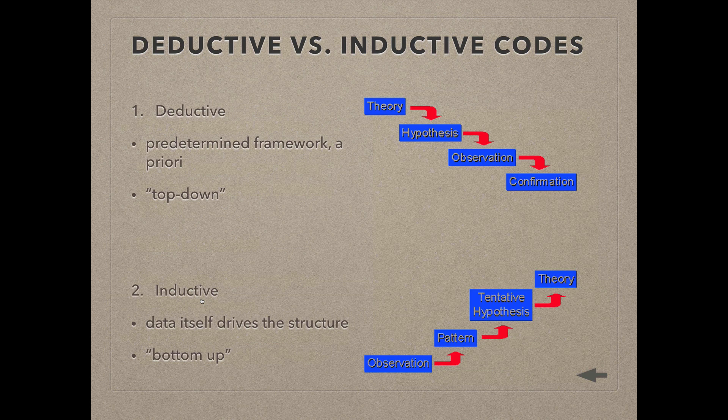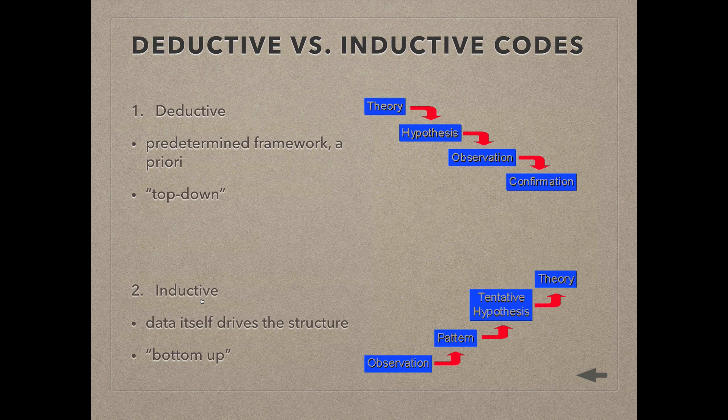There are two fundamental approaches to analyzing qualitative data. The deductive approach and the inductive approach. The deductive approach starts with a predetermined framework for the coding. Basically, the researcher has identified key theories from the literature or previous knowledge, has established the specific hypotheses he or she wishes to test.